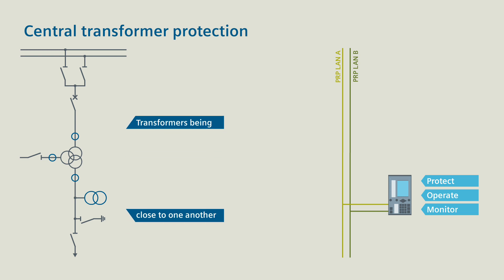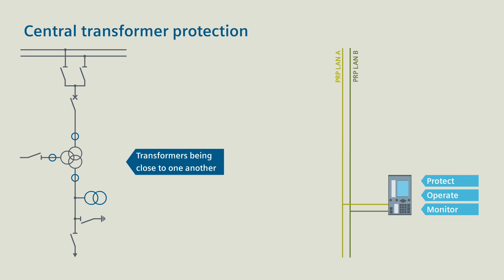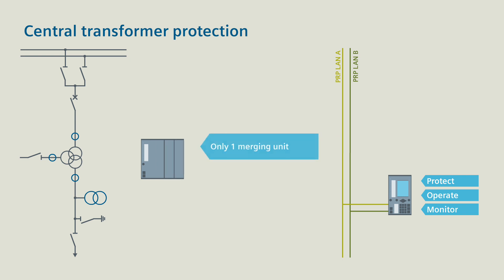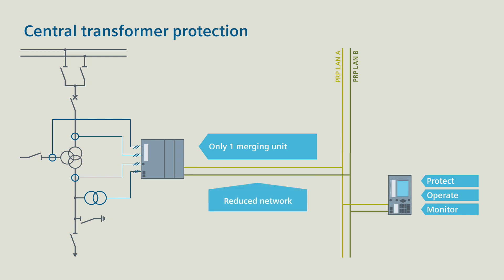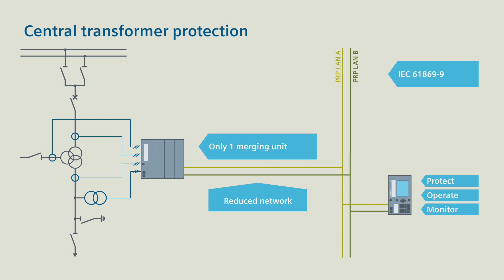Let us also consider the case of the transformers being close to one another. Then you only need one single CProtek 5 merging unit to digitalize the analog measured values of all transformers. This is really advantageous with regard to the device and to the network costs, because for the common data stream of all transformers, you require only one redundant connection to the process bus. As standards, you use IEC 61869 Part 9 and IEC 61850 Part 9-2.